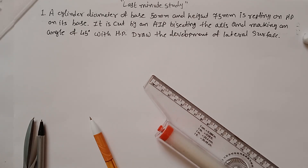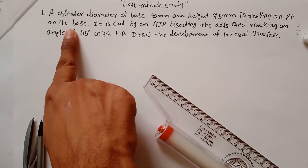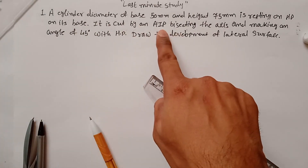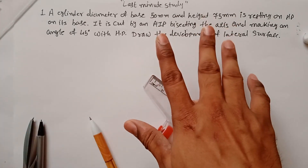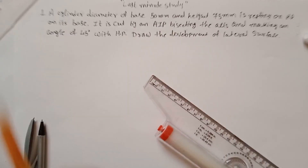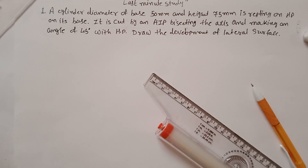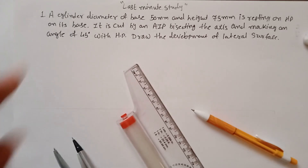The first problem is about development of surface. First, identify the shape: a cylinder with a diameter of base 50mm and height 75mm, resting on HP, cut by an AIP bisecting the axis. Our objective is to draw a front view and a top view of the solid.